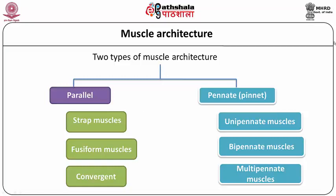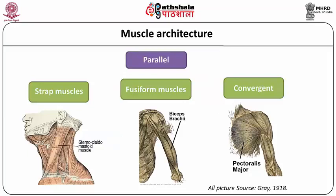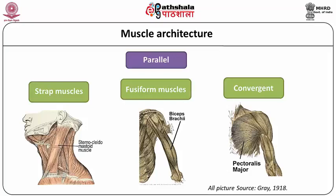There are two types of muscle architecture: one is the parallel type and another is the pennate type. In the parallel type there are subclasses like strap muscles, fusiform muscles, and convergent muscles. In the pennate type of arrangement there is unipennate, multipennate, and bipennate. One great example of a strap muscle is the sternocleidomastoid muscle of the neck, which causes neck motion in the side direction. Biceps is the best example of a fusiform muscle, and a convergent muscle example is pectoralis major — it looks like a fan where the handle is the humerus and it stretches to the chest.